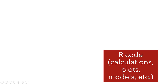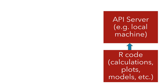Let's suppose we have some R code that's maybe doing calculations or generating plots, or it could also be doing some statistical models. And then we want to take that R code and wrap it inside of an API, so we'll have an API running on a server. That server could just be our local machine, but it could also be running on AWS or Digital Ocean or some other hosting service.